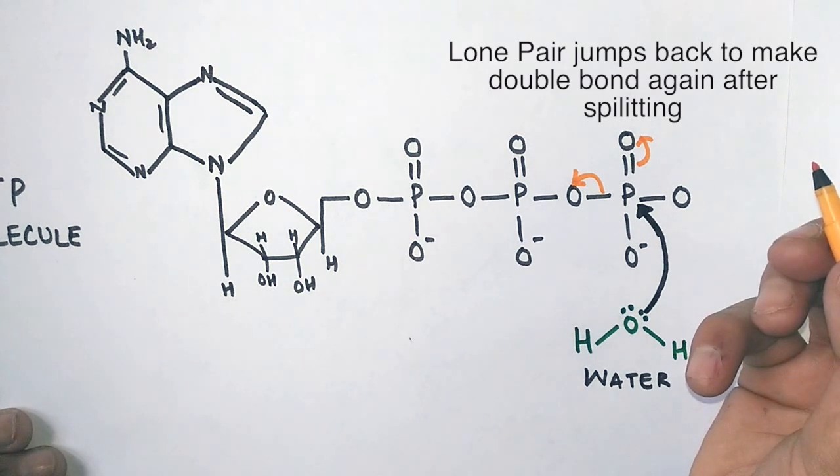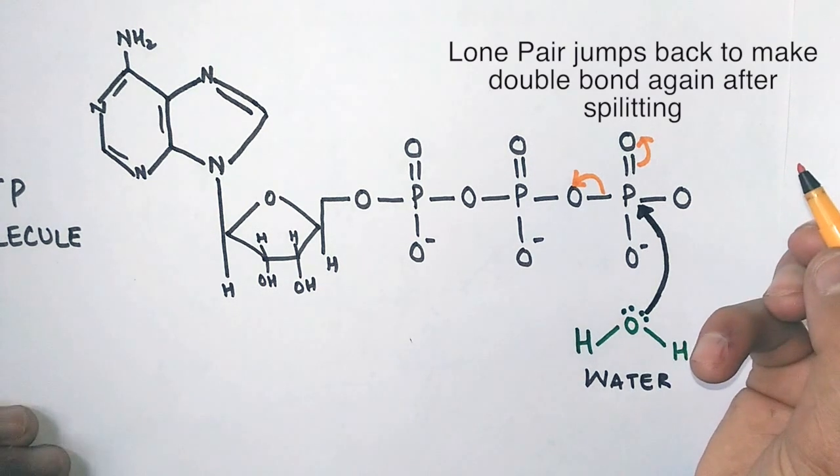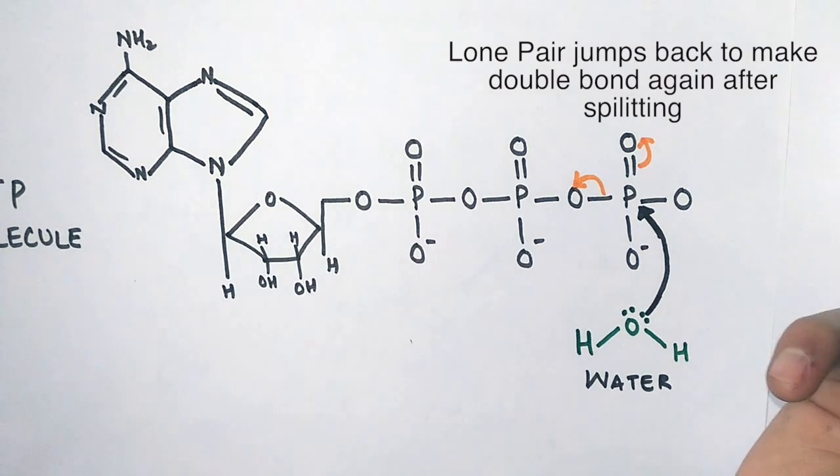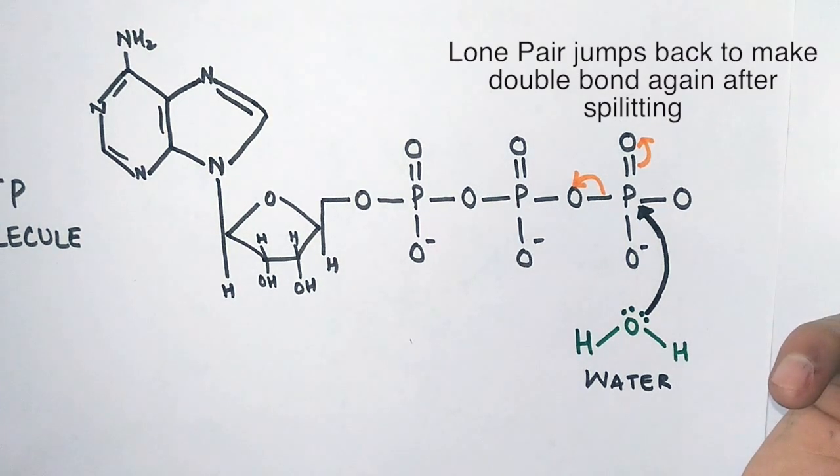With this water molecule, phosphorus is making a sixth bond, but that's not possible. That's why the electron pair shifts towards the oxygen atom and breaks the phospho-anhydride bond here.